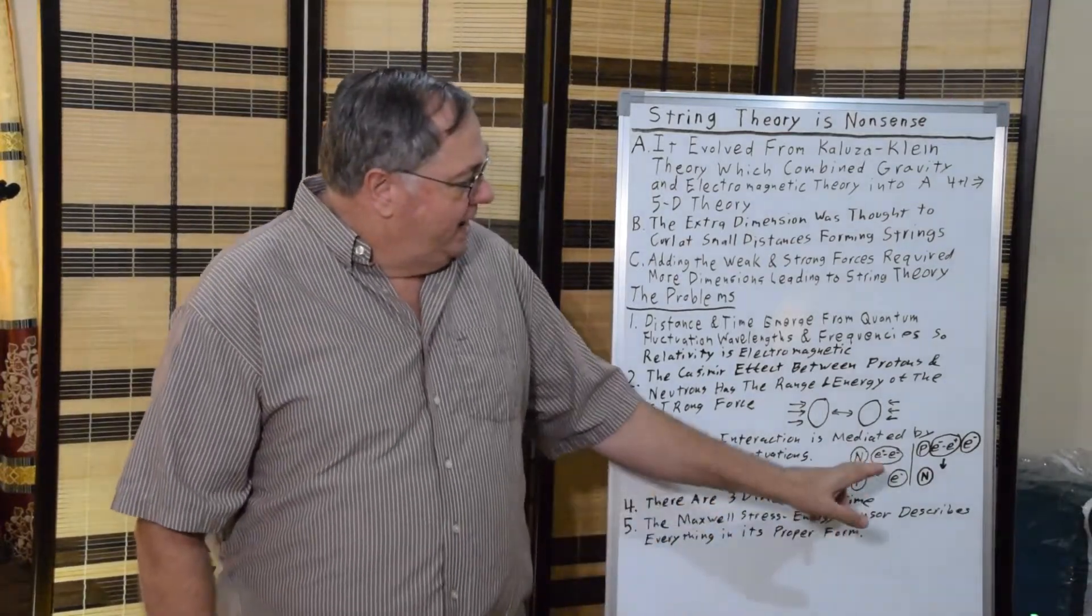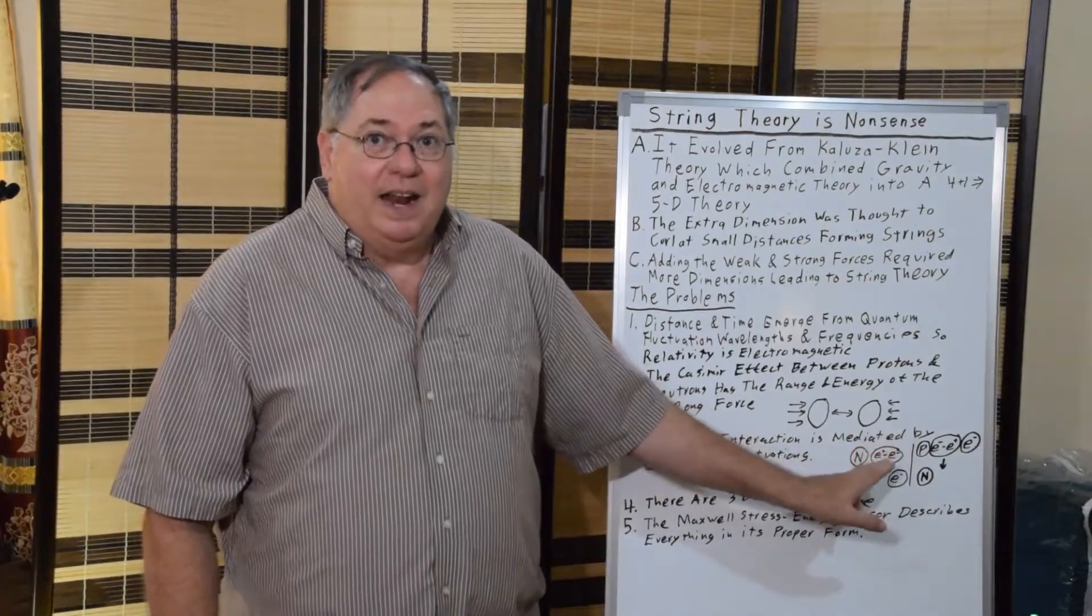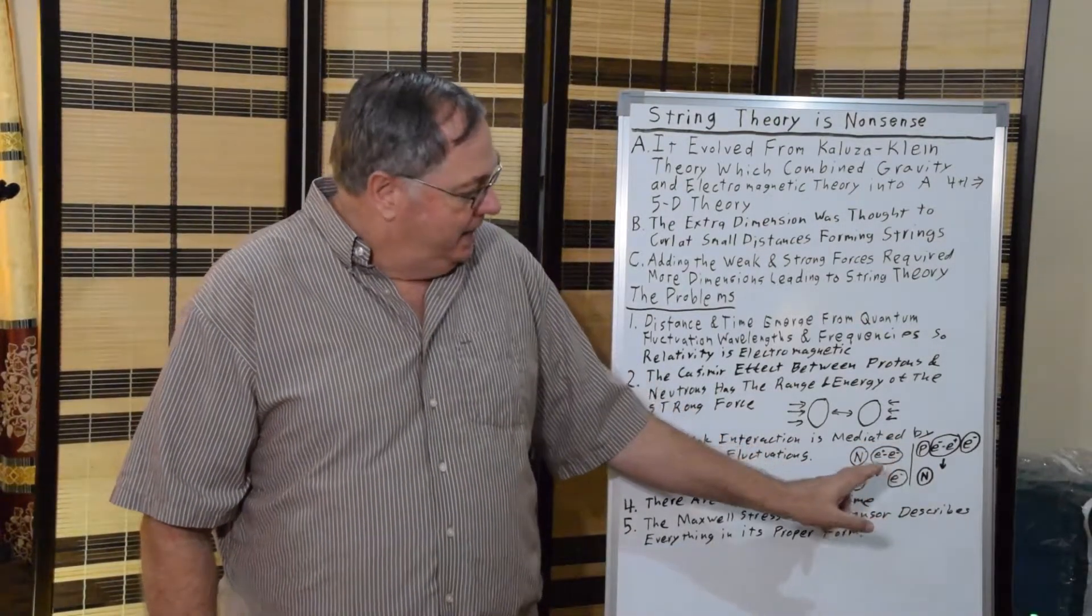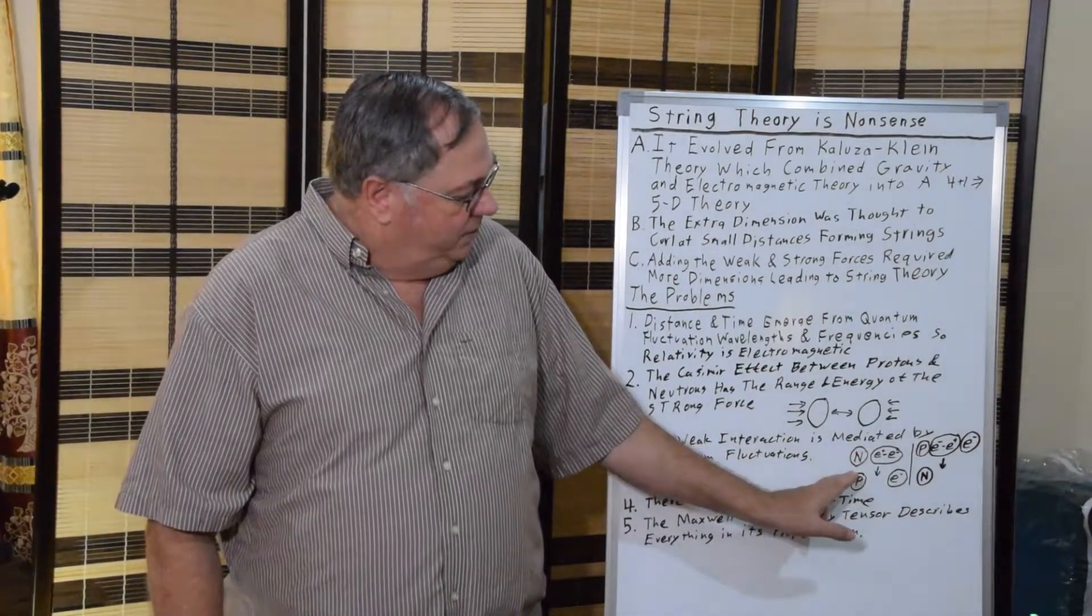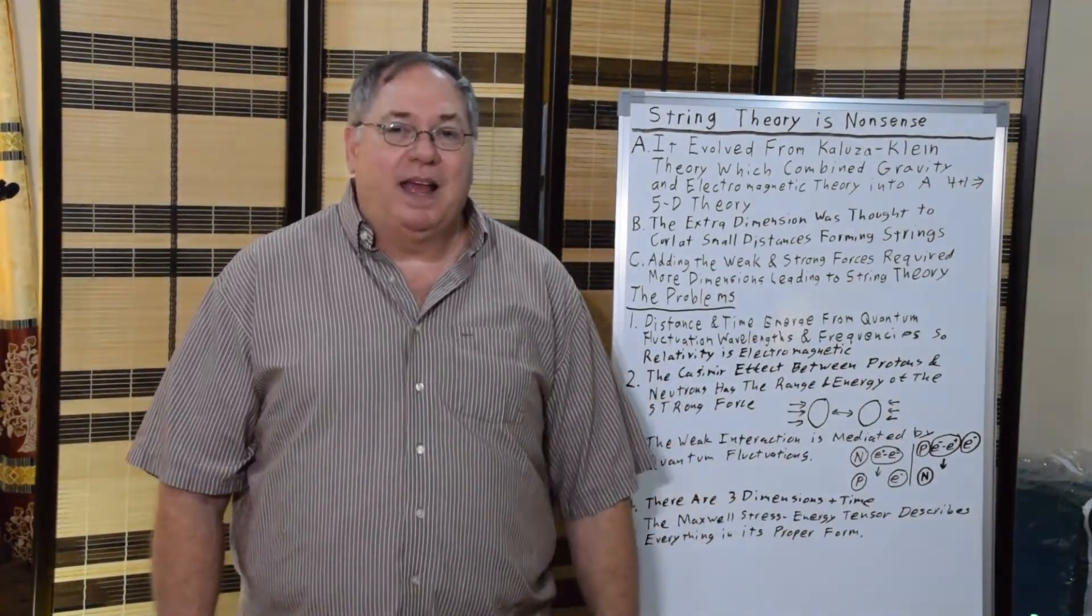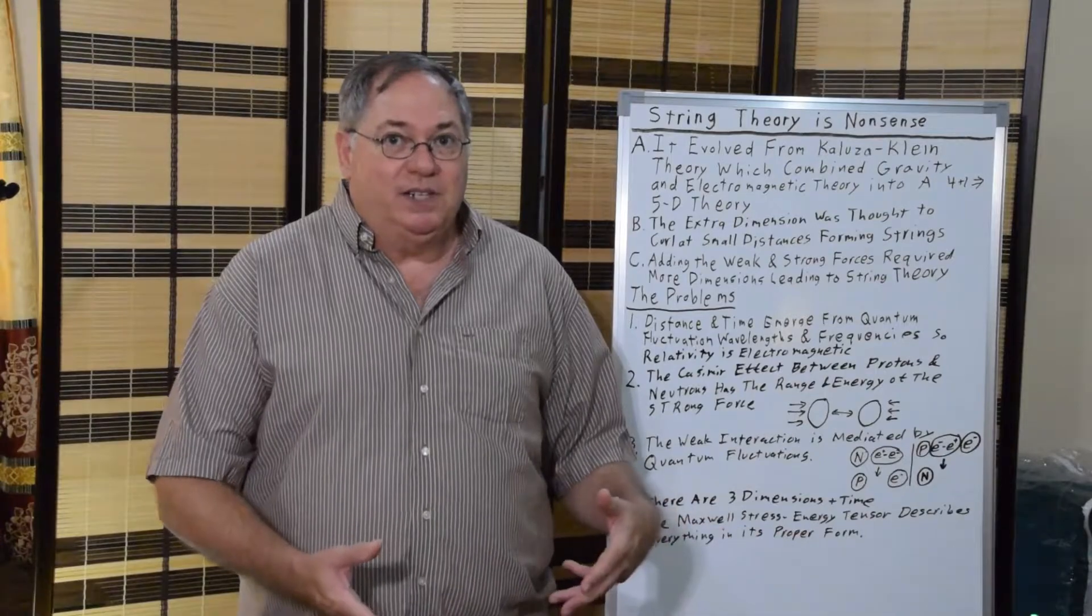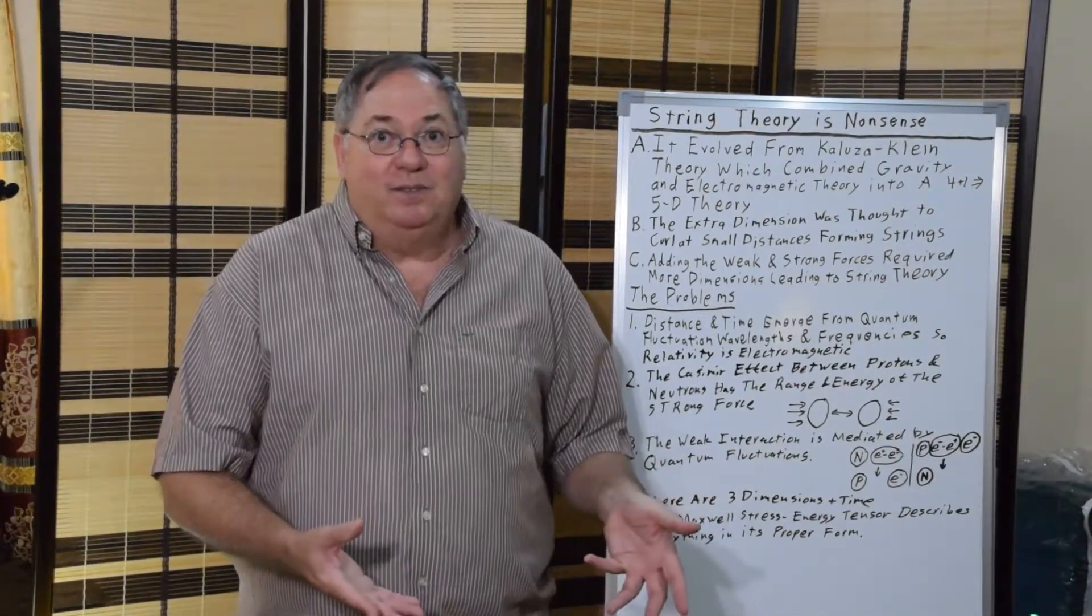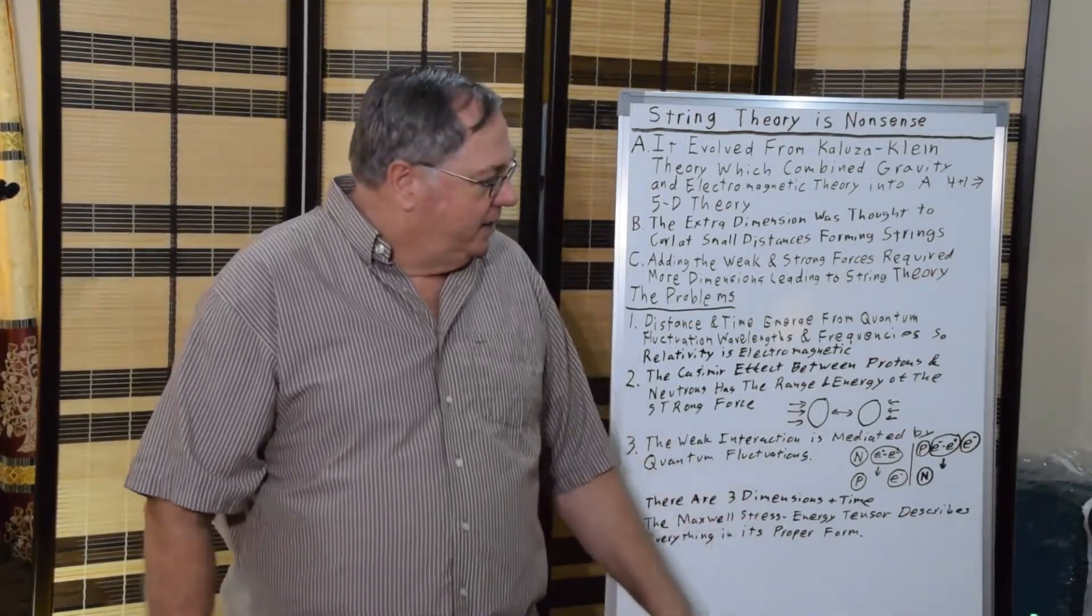And the simplest way to see that happening is if you have a neutron, an electron-positron, a quantum fluctuation nearby, the positron can interact with the neutron, changing it to a proton, and then the electron can become free at a distance. This is just a quantum fluctuation interaction, it's not a force at all. And it's definitely not the weak force as imagined in the standard model.